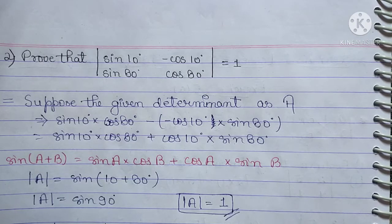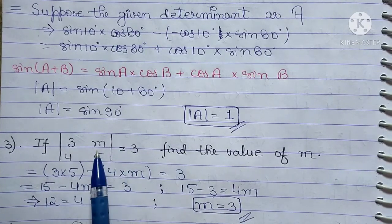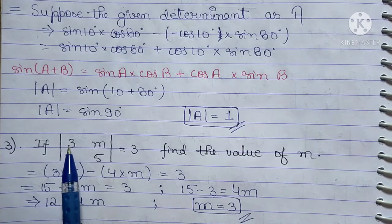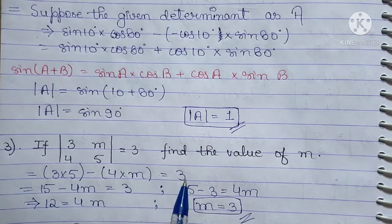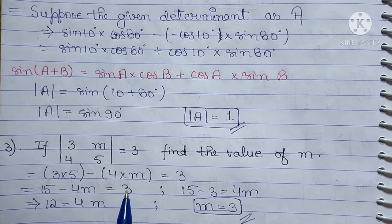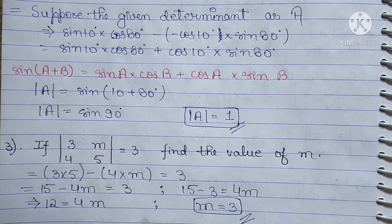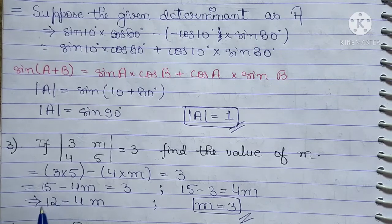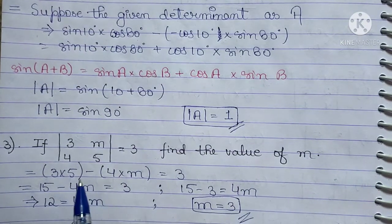Question number 3: The determinant is equal to 3. Find the value of M. We expand the determinant: 15 minus 4M = 3. Moving terms across: 15 minus 3 = 4M, so 12 = 4M, therefore M = 12/4 = 3. Hope you understand — यह easily question है।